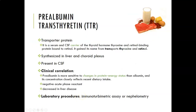The first one is prealbumin, also known as transthyretin. It is a transporter protein — a serum and spinal fluid carrier of the thyroid hormone thyroxine and retinol-binding protein bound to retinol, which is vitamin A. It gains its name from transporting thyroxine and retinol, so transthyretin: transporting thyroxine and retinol.